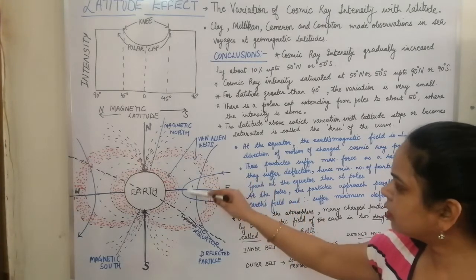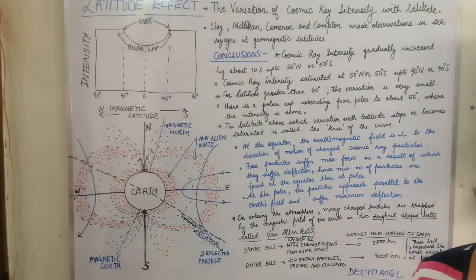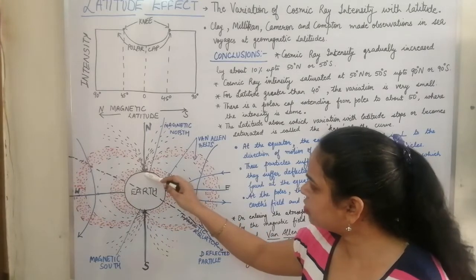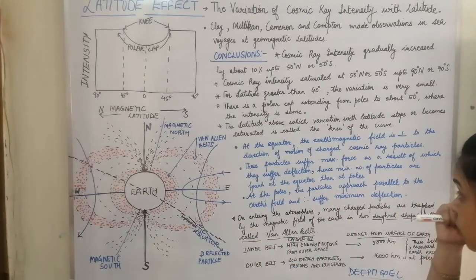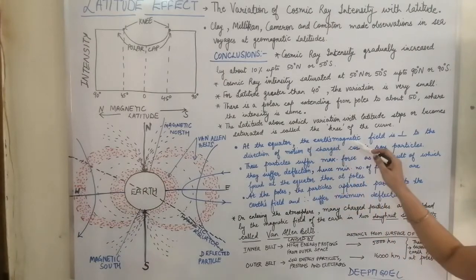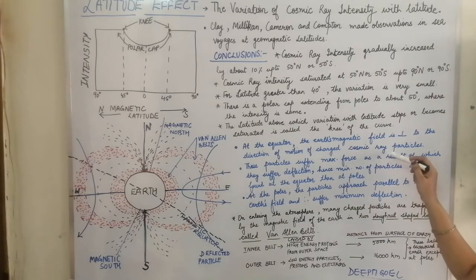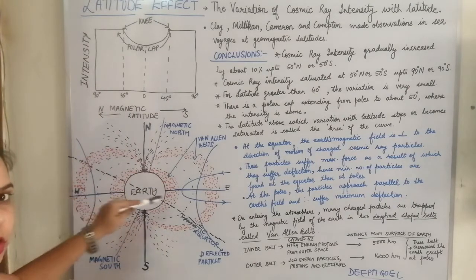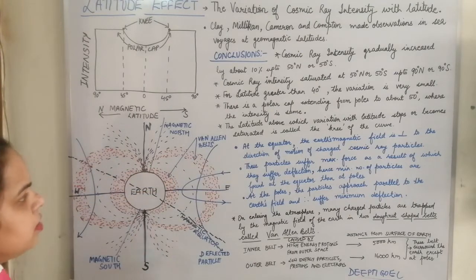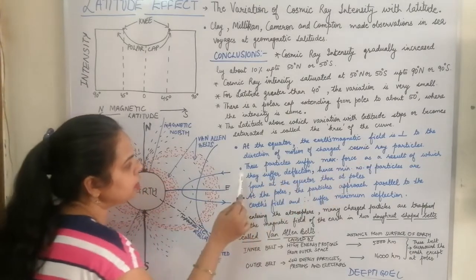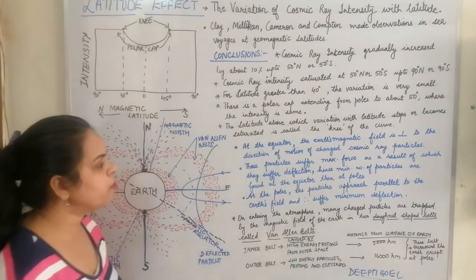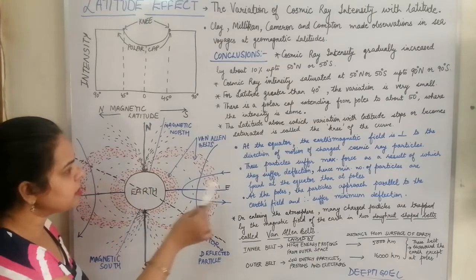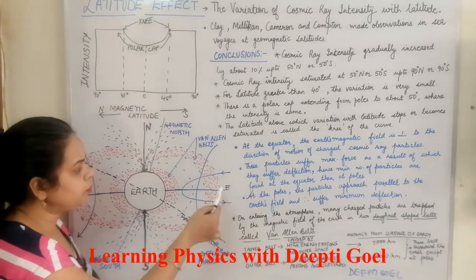At the poles, particles were moving parallel to the poles and the concentration is very much minimum at the equator. At the equator, the earth's magnetic field is perpendicular to the direction of motion of the charged cosmic ray particles. The particles suffer maximum force, resulting in deflection. Hence, a minimum number of particles are found at the equator compared to the poles.